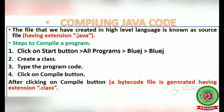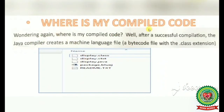The next topic is compiling the Java code. The file created in high level language is known as the source file. Steps to compile a program: click on start button, all programs, BlueJ, then create a class, type the program code, and click on the compile button. After clicking compile, a bytecode file is generated having extension .class.